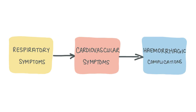The initial phase of the disease is characterised by respiratory symptoms due to pulmonary oedema, including breathlessness, chest pain, and anxiety. The second stage is characterised by cardiovascular changes secondary to left-sided cardiac failure; patients may experience collapse, drowsiness, and chills, and can appear cyanosed. Finally, haemorrhagic complications may occur, such as severe haemorrhage, bruising, and DIC.